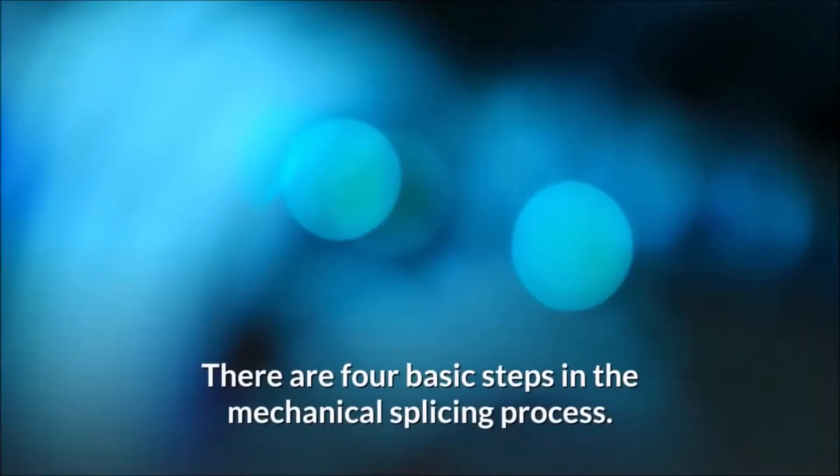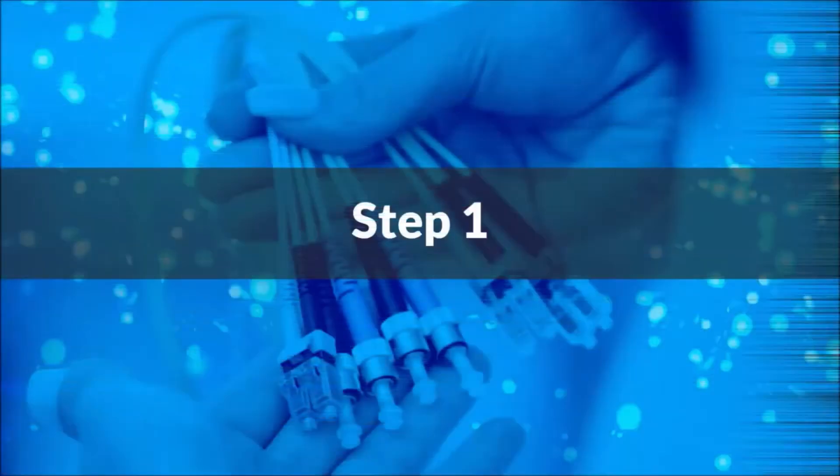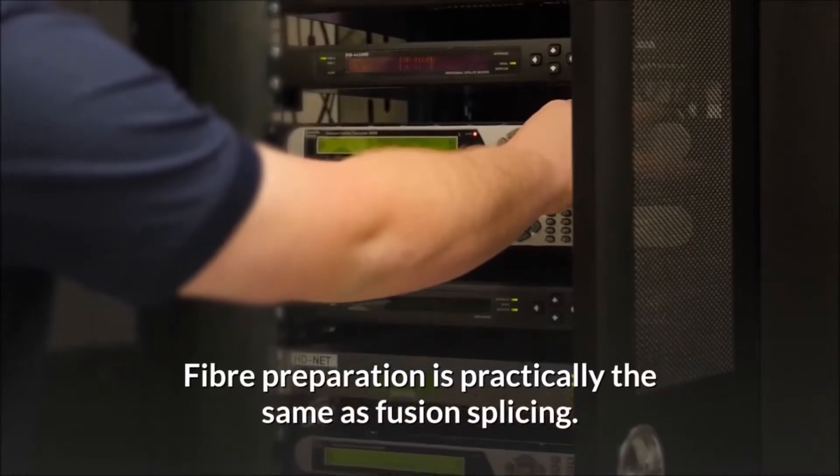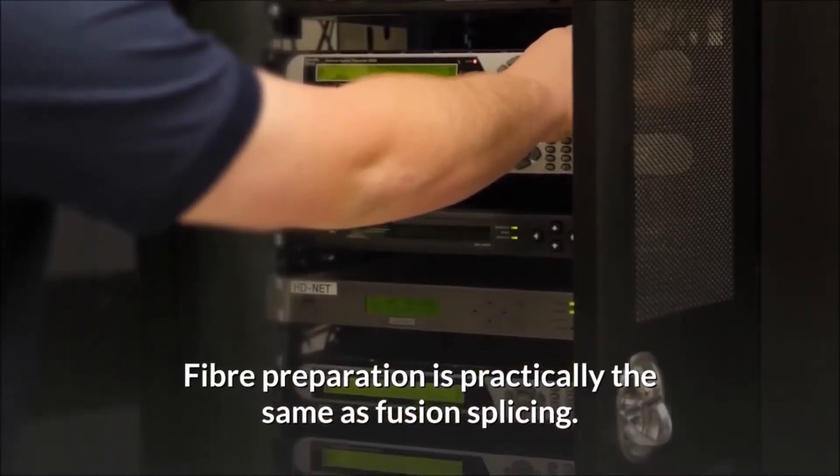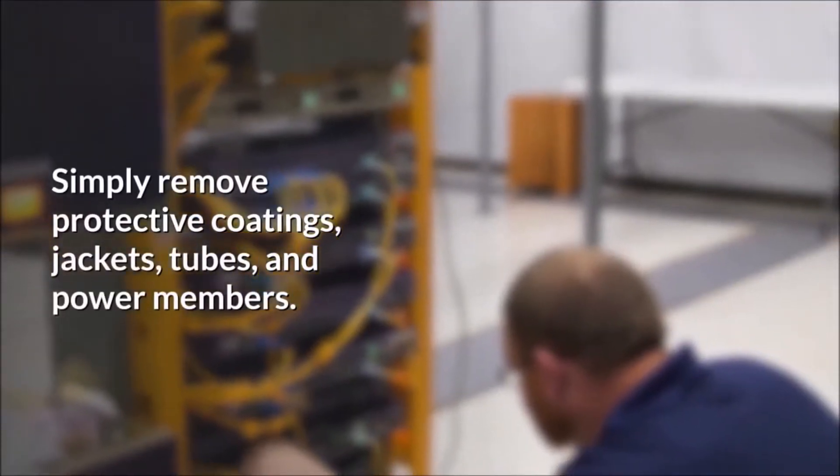There are four basic steps in the mechanical splicing process. Step 1: Fiber preparation is practically the same as fusion splicing. Simply remove protective coatings, jackets, tubes, and power members, so we can see the bare fiber. Then make sure the fiber is clean.